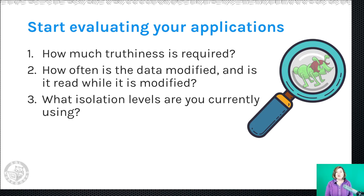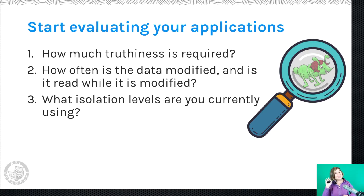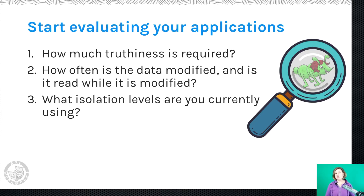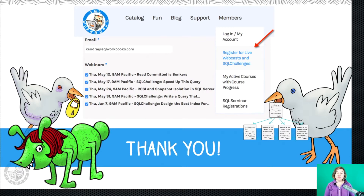You may be using a lot of Read Uncommitted, or there may be apps using Serializable without your realizing it. You can find this in the dynamic management views of the database looking at connections — though it's a little tricky because you can also use hints in your code and set isolation levels when accessing specific tables. You'll need to look at multiple levels, including the code itself. Use this as a place to prioritize: look at your most critical applications, figure out data modification patterns, and start planning a change to ensure correct data is being returned to users.